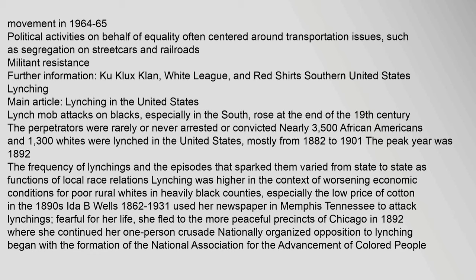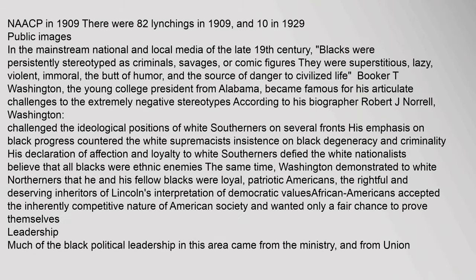Ida B. Wells (1862–1931) used her newspaper in Memphis, Tennessee to attack lynchings. Fearful for her life, she fled to the more peaceful precincts of Chicago in 1892, where she continued her one-person crusade. Nationally organized opposition to lynching began with the formation of the National Association for the Advancement of Colored People (NAACP) in 1909. There were 82 lynchings in 1909 and 10 in 1929.